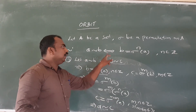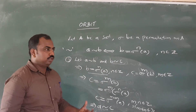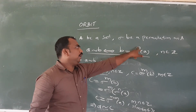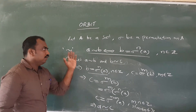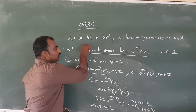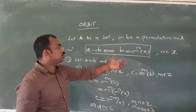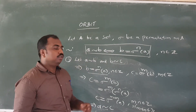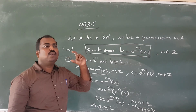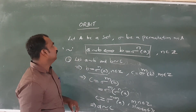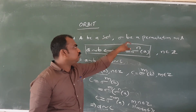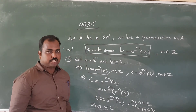A relative to B and B relative to C implies A relative to C. So A relative to B implies B is equal to sigma raised to n of A, where n belongs to Z. This shows the relation is an equivalence relation.